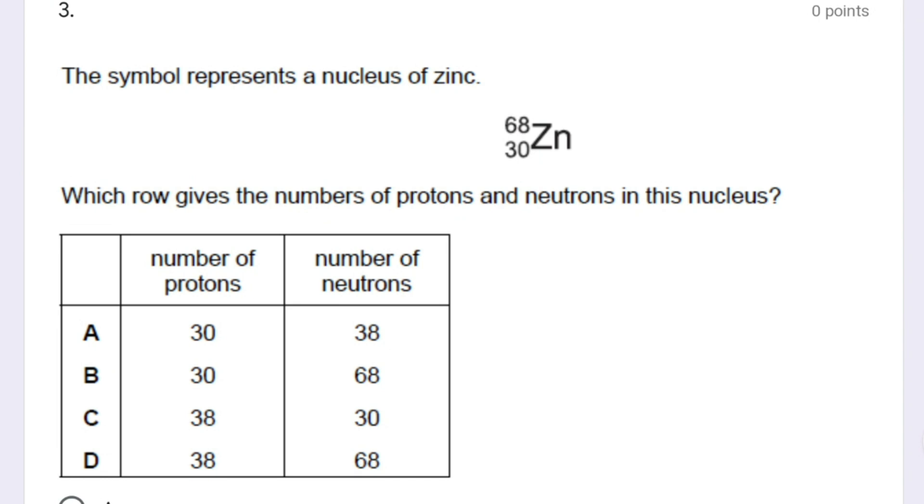Third question: the symbol represents a nucleus of zinc. You can see a zinc symbol over here. Which row gives the numbers of protons and neutrons in this nucleus? As we see all the options, option A is correct because the number of protons will be 30 and number of neutrons will be 68 minus 30, that is 38.